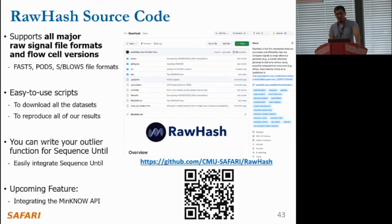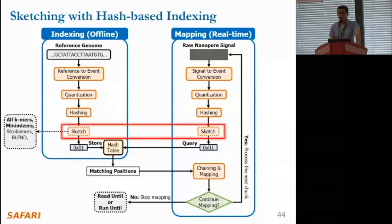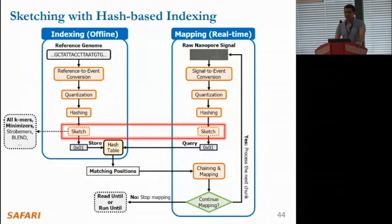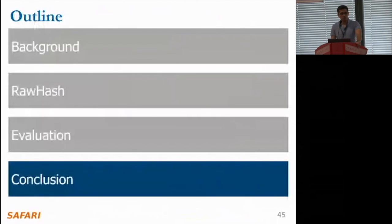You can also write your own outlier function to improve Sequence-Until, and we continue to improve our implementation. Our upcoming feature is direct integration with the MinKNOW API. Although we have not explained it in detail, our hash-based approach enables using existing sketching techniques such as minimizers, strobemers, and fuzzy seed matching with BLEND for mapping raw signals, which was not possible before. This is because we can now identify similarities using simple hash matches. We already implement the minimizer sketching technique in RawHash but leave full explanation and evaluation for future work.